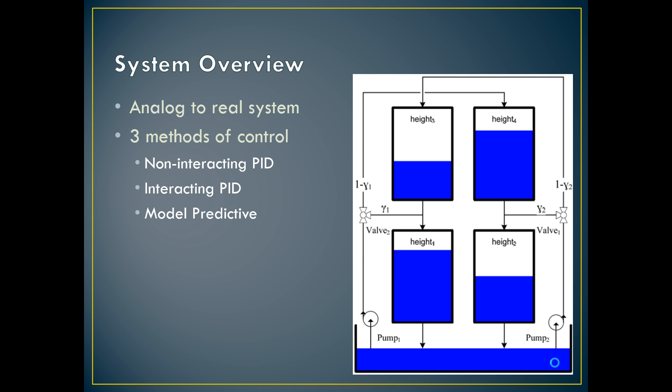We did three different methods of control. We tried non-interacting PID controllers, interacting PID controllers, and model predictive control. We looked at literature and found the real system is supplied to big agricultural reservoirs, so that's the analog to what this experiment is for.